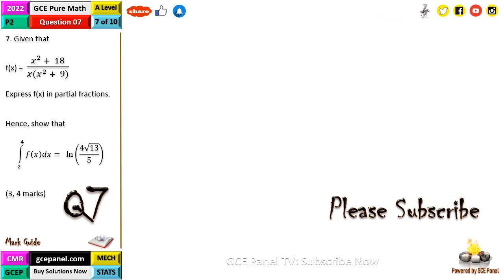Question 7 reads: given that f(x) equals x squared plus 18 all that on x into x squared plus 9, express f(x) in partial fractions. Hence show that the integral from 2 to 4 of f(x) dx is equal to ln 4 root 13 on 5. This question carries 7 marks.